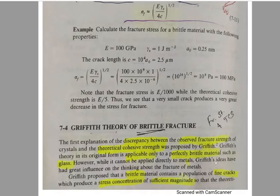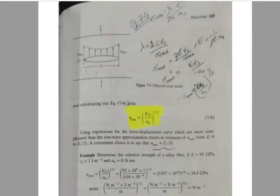Figure 7-3 shows a thin elliptical crack in an indefinitely wide plate. The crack has a total length of 2c and a radius of curvature at the tip of ρt. The maximum stress at the tip is sigma_max and the applied nominal tensile stress is sigma_act. This is a large plate with a very small elliptical crack.